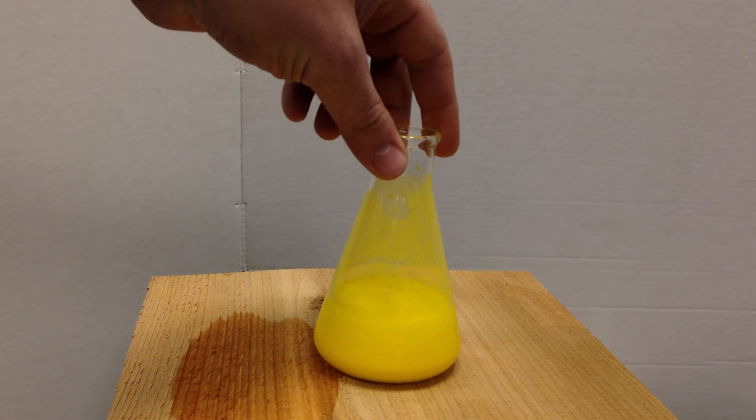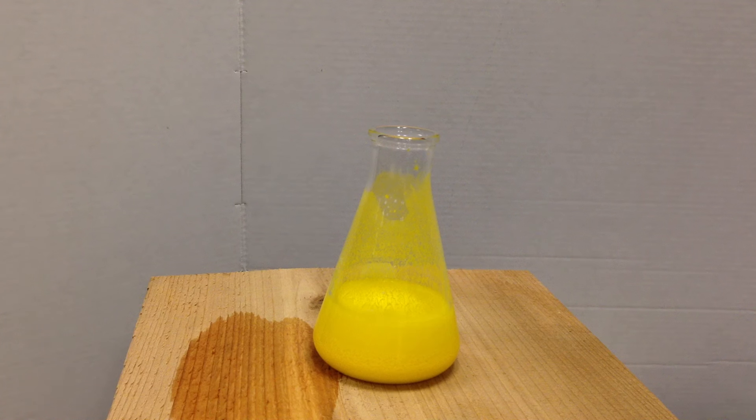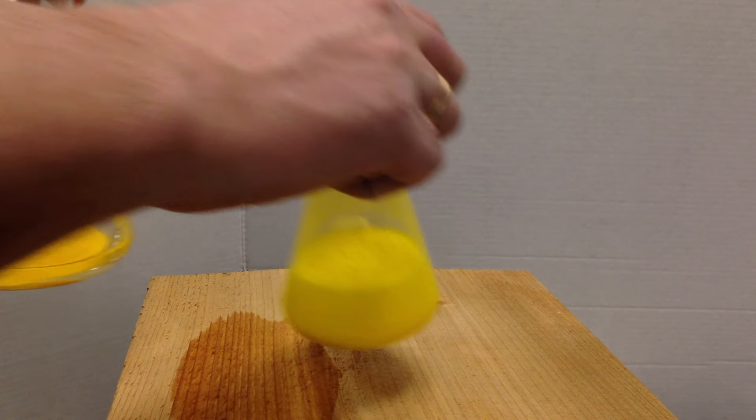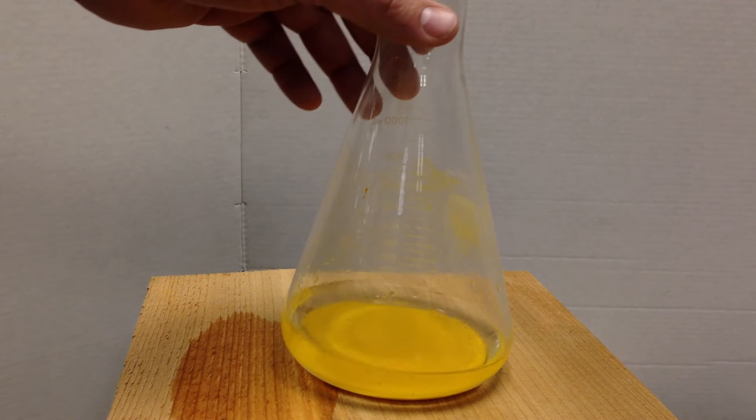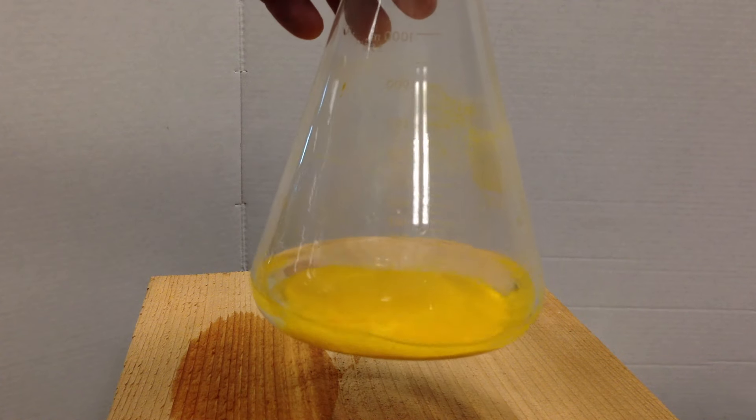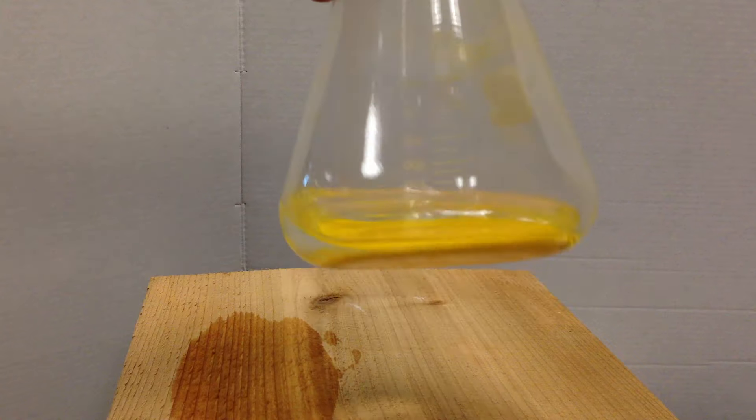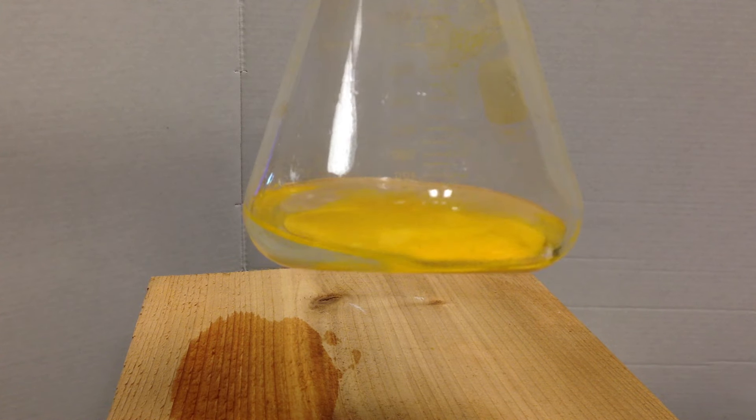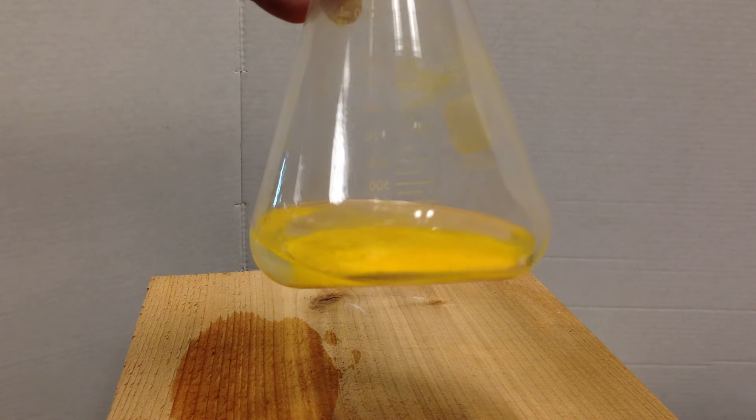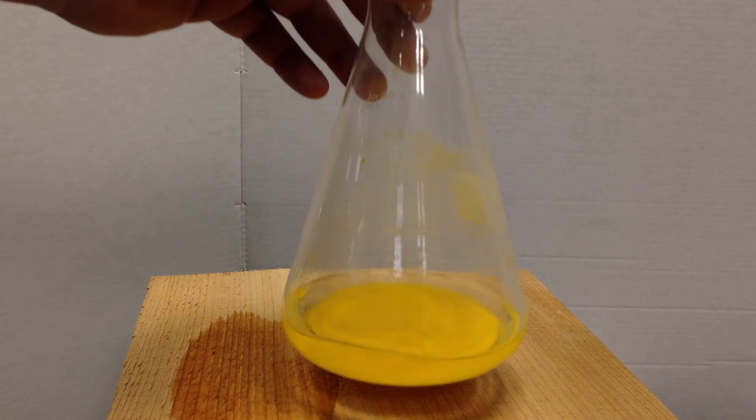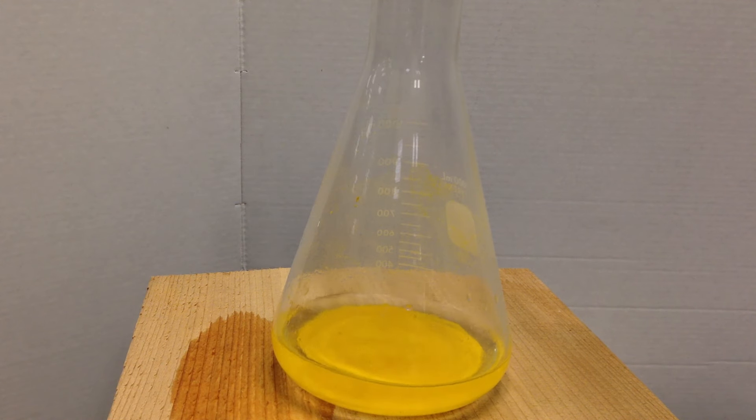And if we let this settle for a while we'll get something like this. This is a reaction I did about an hour or so ago and you can see here that the clear solution is the potassium nitrate ions or the potassium and nitrate ions and the solids are at the bottom. That's settled at the bottom. So there is your precipitating reaction.